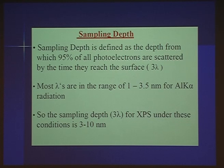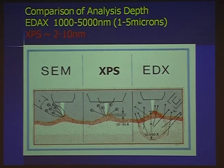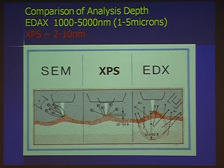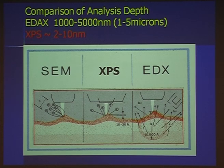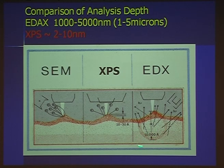Contamination and things the sample has been exposed to are very important. If you compare XPS to the microscope techniques — SEM and EDAX — this is not to scale, but that's 1 micron deep. These X-rays in SEM come from 1 to 5 microns down; we're talking about electrons coming from 30 to 100 Angstroms. So what you might detect with SEM may be heavily overriding what's really on the top surface, whereas XPS gives information on what's right at the top.